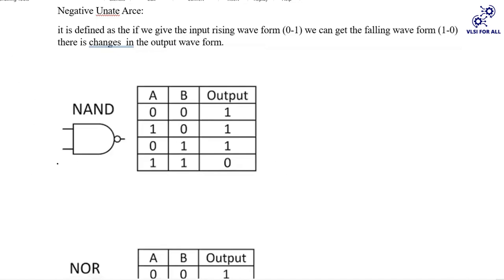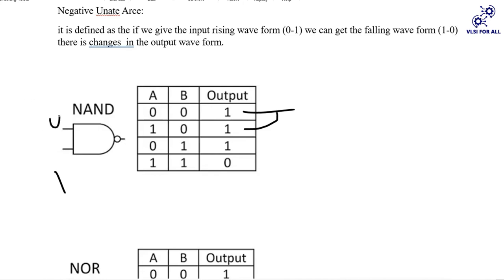B is constant at 0, A also starts at 0; output is 1. Change A to 1: inputs 1, 0 — output stays 1. Then change B to 1 and A becomes 0: inputs 0, 1 — output is 1. Change A to 1: inputs 1, 1 — output becomes 0. So if we give input 0 to 1, we get output 1 to 0. That is negative unate — opposite of positive unate.